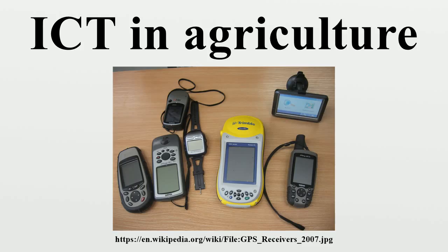E-agriculture is one of the action lines identified in the Declaration and Plan of Action of the World Summit on the Information Society. The Tunis Agenda for the Information Society, published on 18 November 2005, emphasizes the leading facilitating roles that UN agencies need to play in the implementation of the Geneva Plan of Action. The Food and Agriculture Organization of the United Nations has been assigned the responsibility of organizing activities related to the action line under C-7 ICT Applications on e-Agriculture.